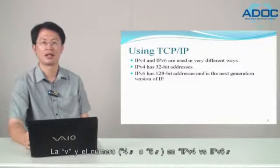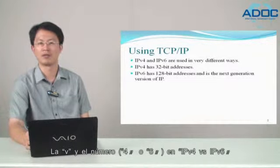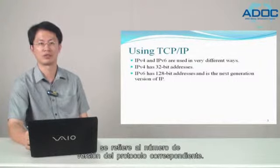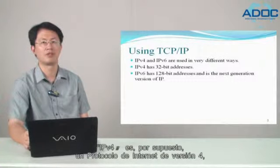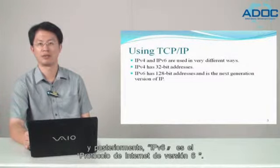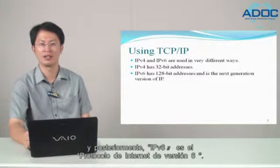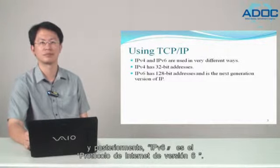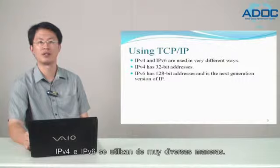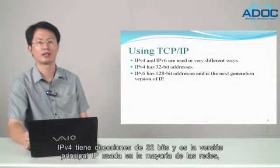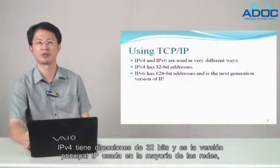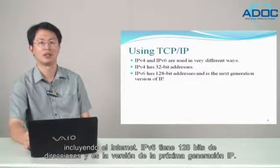The V and number 4 or 6 in IPv4 versus IPv6 refers to the related protocol version number. IPv4 is Internet Protocol version 4, and IPv6 is Internet Protocol version 6. IPv4 has 32-bit addresses and is the primary version of IP used on most networks, including the internet.